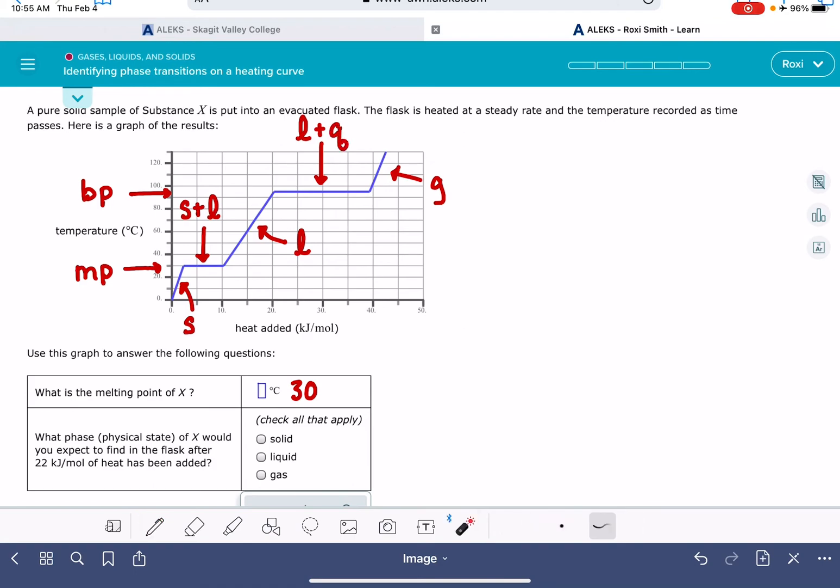My question is asking about 22 kilojoules of heat. So I'm going to find 22 kilojoules of heat on this axis. 20, 25, 22 is probably right here. And this corresponds to a point on the liquid gas line. So after 22 kilojoules of heat have been added, I have both liquid and gas.